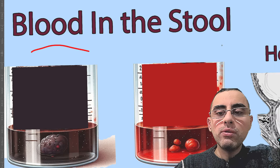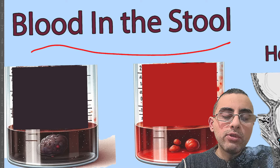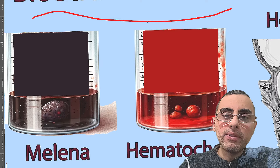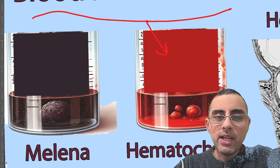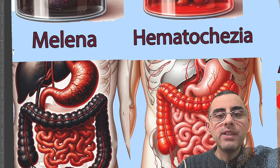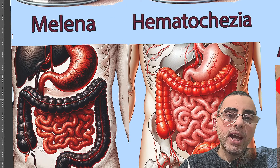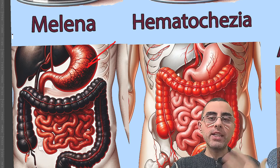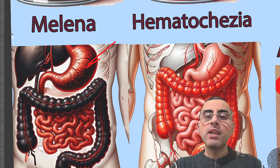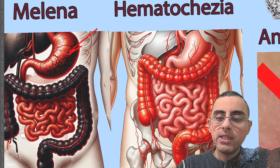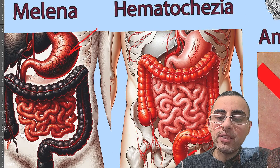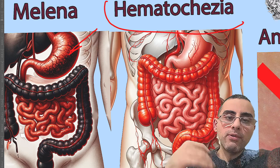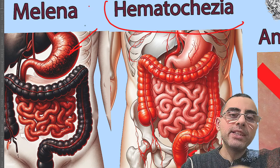We will talk about blood in the stool. First we notice stool color — it can be a darker color, which is called melena, or brighter red, which is called hematochezia. The main principle is: if it's melena or darker, it's from the gastric, small intestine, or esophagus — the upper part. If it's brighter, it's from the lower part.